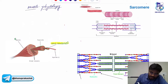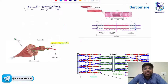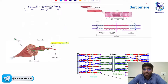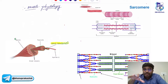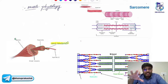What I will be explaining in today's class is the structure of the muscles, the different types of proteins present in the muscle, as well as how muscle contraction occurs. You had a basic idea about muscle contraction from class 11th and 12th — in this class, I will explain things in a little more detail.